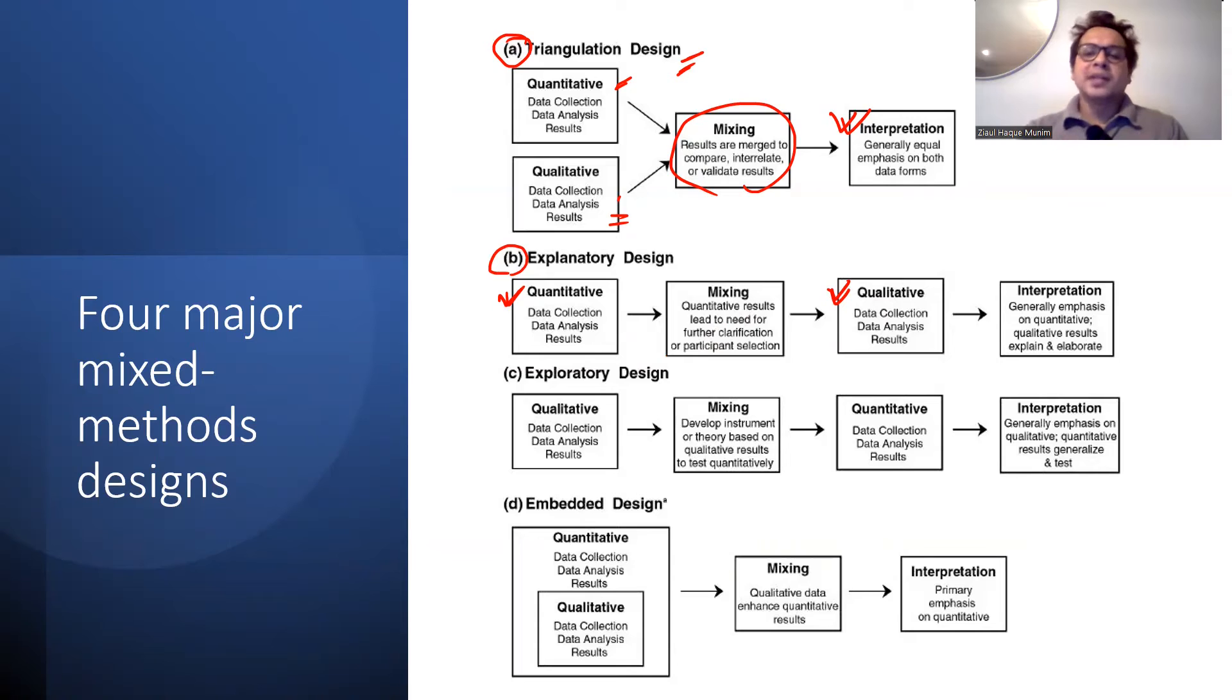Sometimes in quantitative research, we find something we didn't expect. We expected a positive relation between two variables and suddenly we get a negative association or no association. So we want to select some participants, do some interviews, or do some kind of qualitative data collection and analysis.